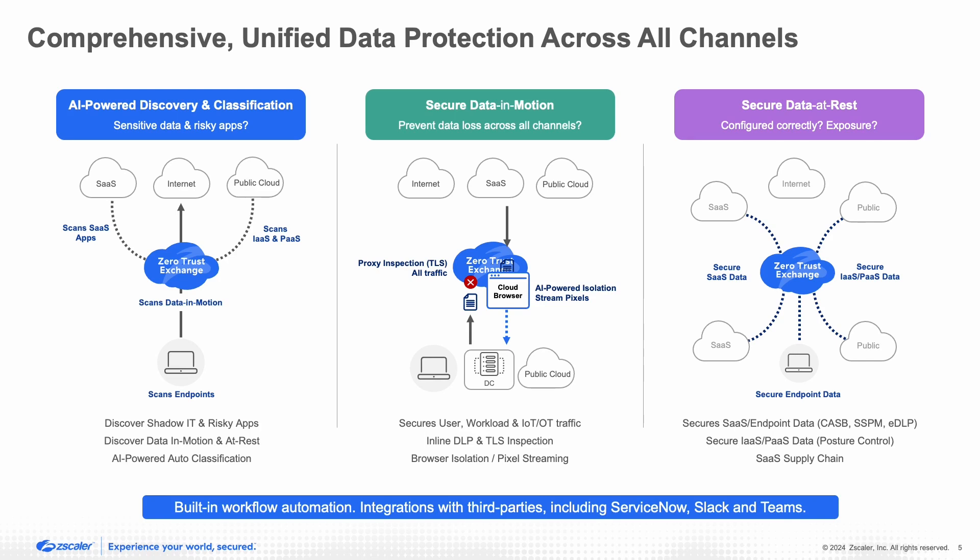A first part of our data protection platform is a comprehensive AI-powered discovery and classification for all data across all channels. We provide discovery of what kind of data it is, which applications the data is going to, and give you complete context across it. For data in motion — all data going to your public cloud applications, SaaS applications, as well as internet-bound applications — we provide full visibility and control across those applications.